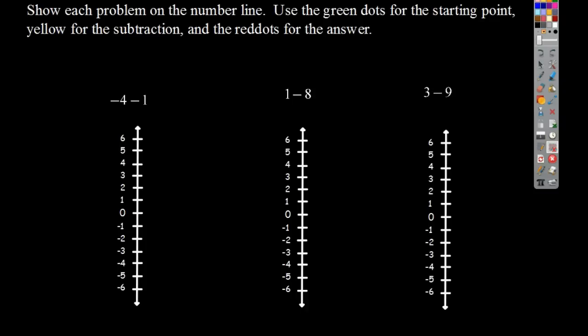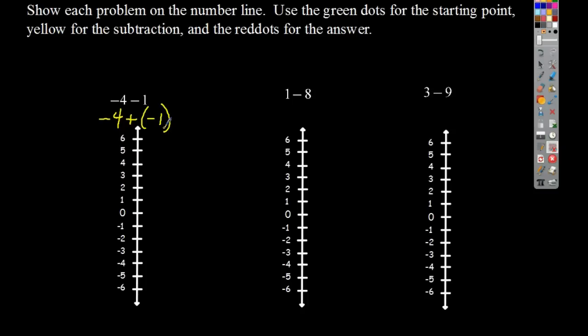Go ahead and pause the video and try solving those on your own, using whichever method you prefer. Let's work through them. First: negative 4 minus 1. Rewriting as addition: negative 4 is going down, and the 1 is going up, but I'm changing it so instead of going up it goes down. So it becomes negative 4 plus negative 1, which means down 4 then down another 1, putting me at negative 5.